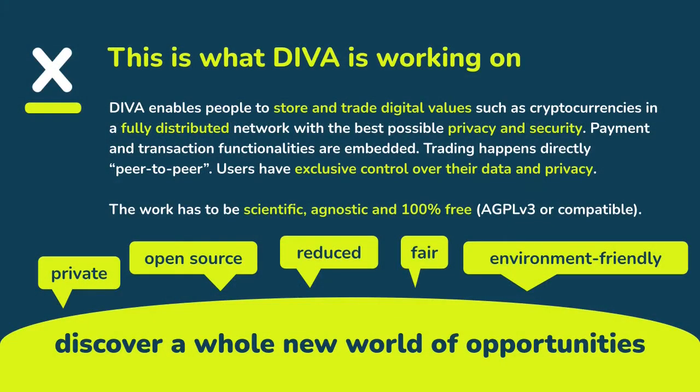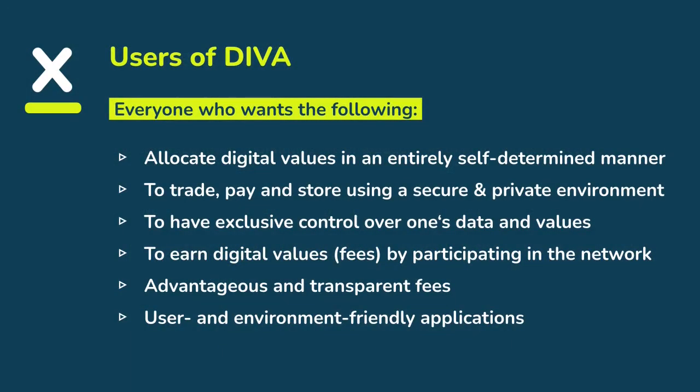We're working on technology solutions. The technology is peer-to-peer, and we also cooperate with universities currently in Switzerland. We want to be scientific, agnostic, and we're 100% free and open source software. The users of Diva usually want the following: to allocate their digital values in an entirely self-determined manner, to have exclusive control over their data and values, and to earn digital values as fees by participating in the network or being part of the infrastructure.